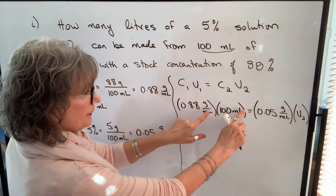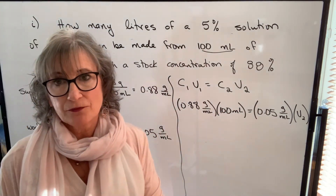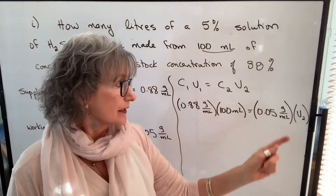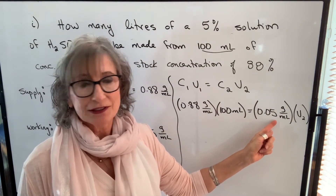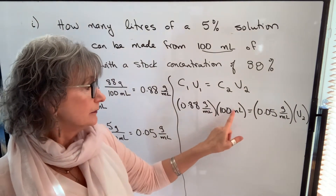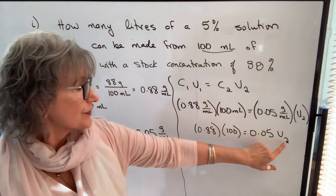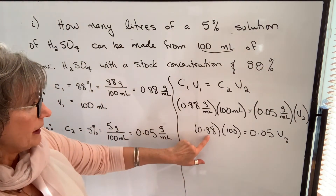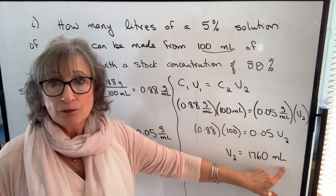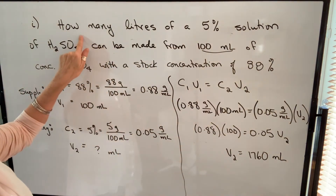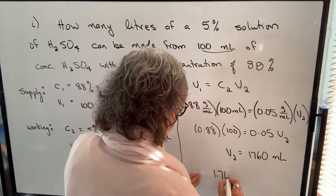When you multiply C times V, the milliliter units cancel, representing the mass of solute in each solution — which stays equivalent because we're only adding solvent, not more solute. To solve for V2, I multiply 0.88 by 100 and divide by 0.05, giving a volume of 1,760 milliliters. The question asks for liters, so dividing by 1,000 gives 1.76 liters.